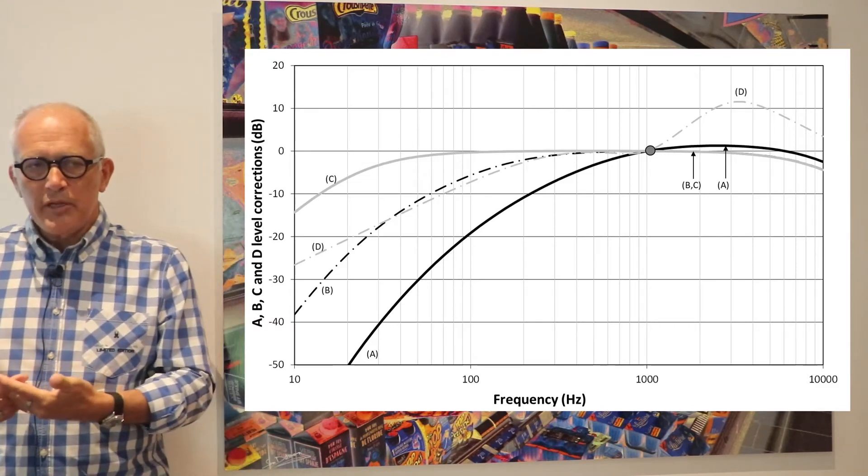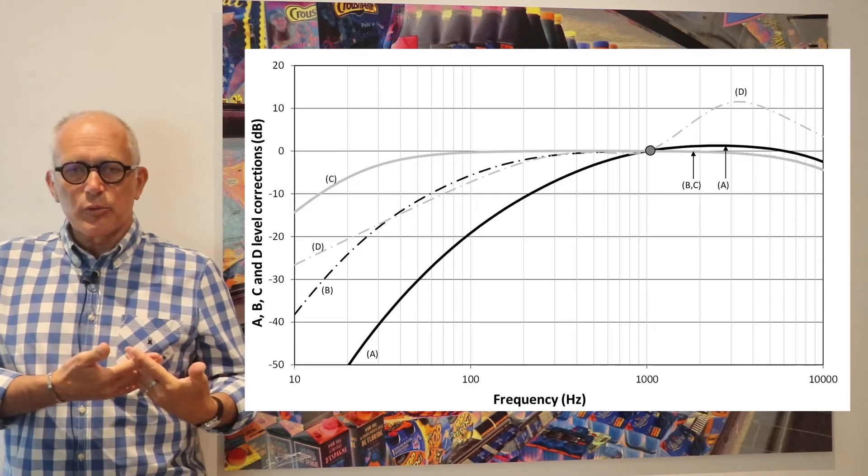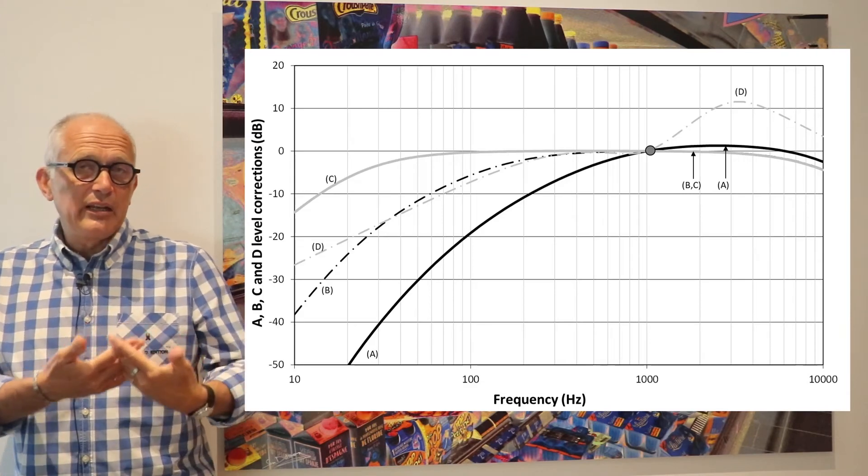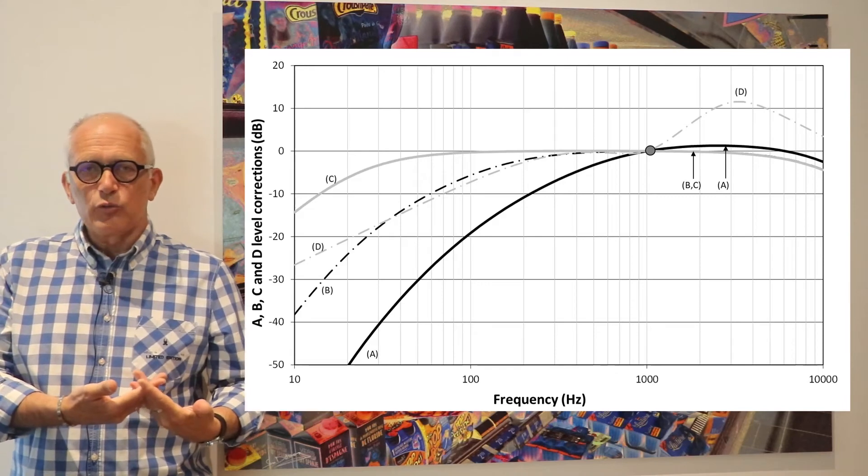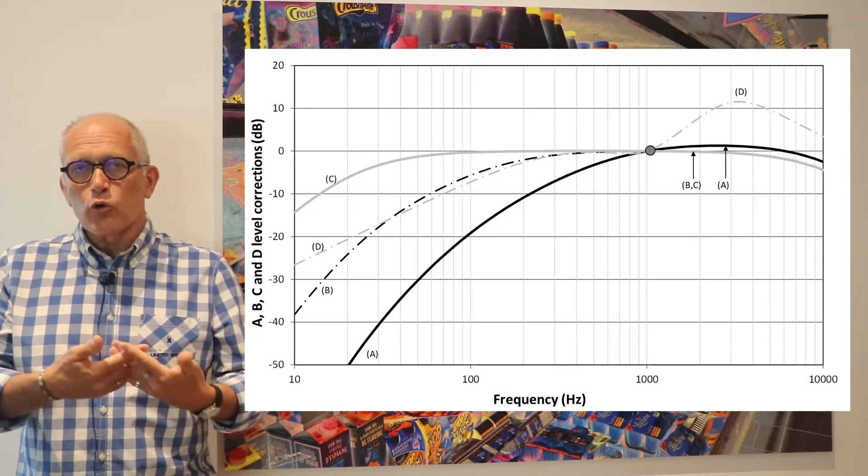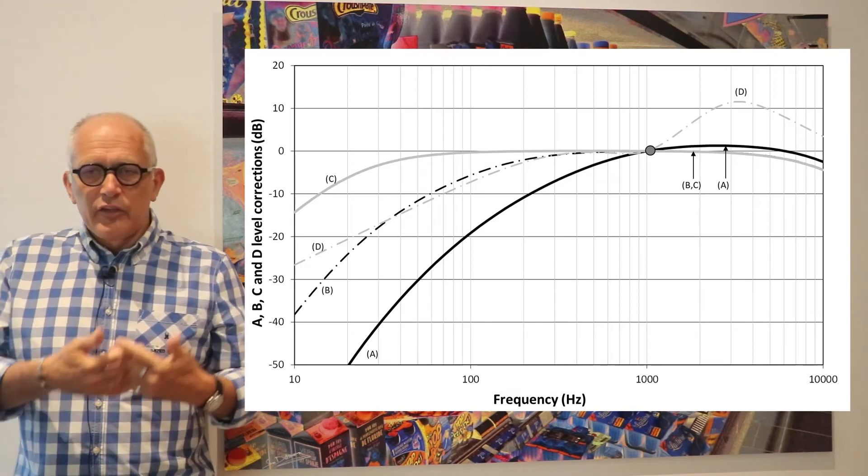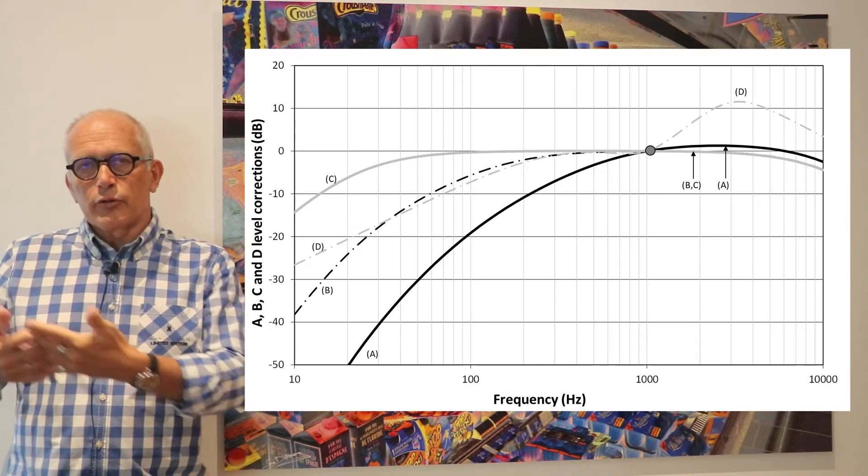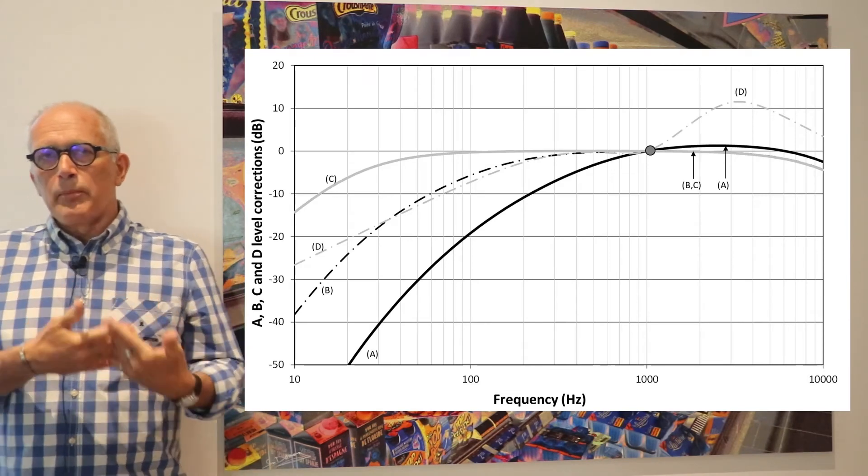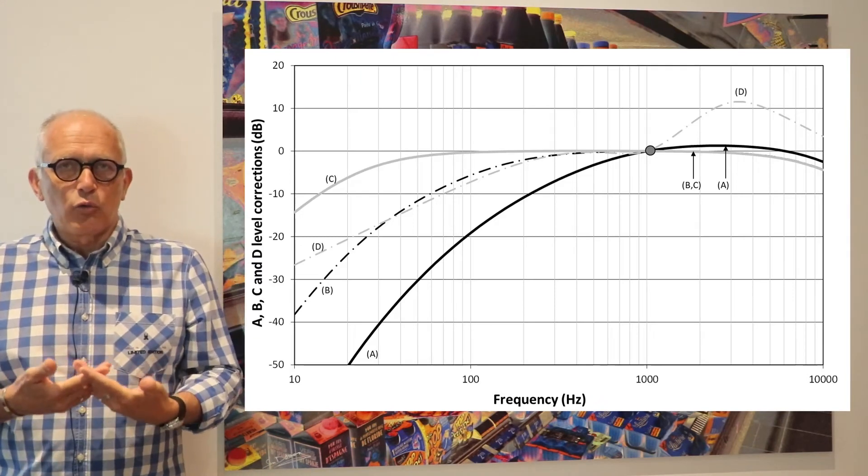And that's why on sound level meters you can take measurements of what is called dB linear without any correction corresponding to the ear sensitivity, or dB A, B or C. The A, B, and C filters are based on the equal loudness contour.